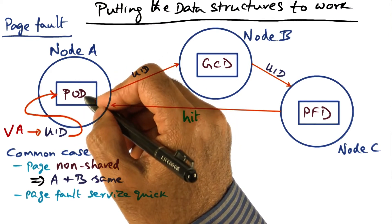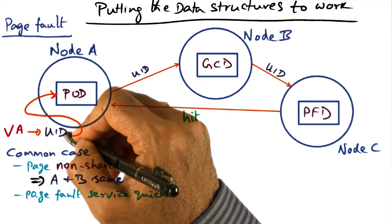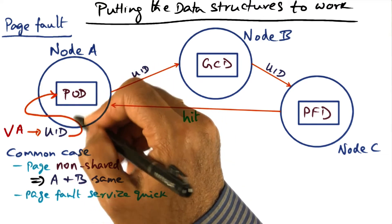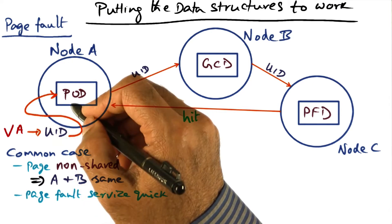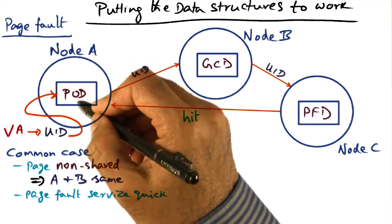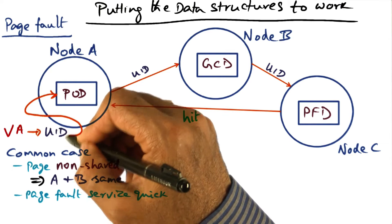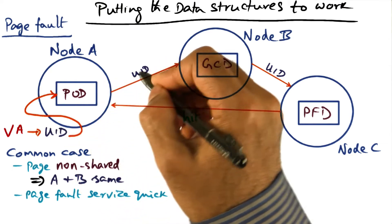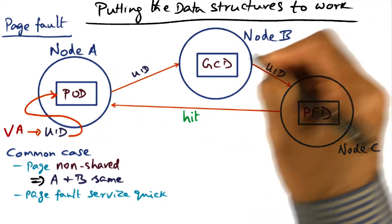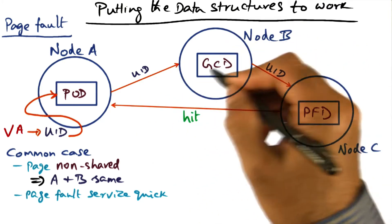The page ownership directory is something that I can trust. It will tell me, given this UID, who the owner of this page is. You go to him because he has the GCD data structure for this. So node A finds out the identity of the owner for this UID, and that happens to be node B. So it sends the UID over to node B.